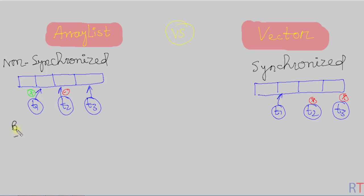ArrayList gives better performance because multiple threads can simultaneously access ArrayList, which improves the overall system performance.